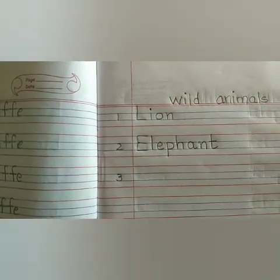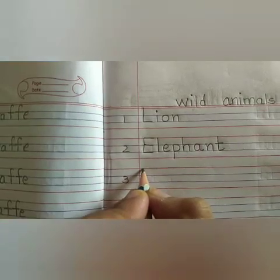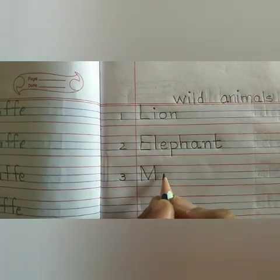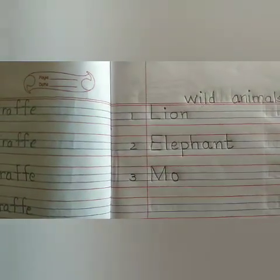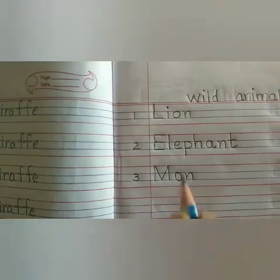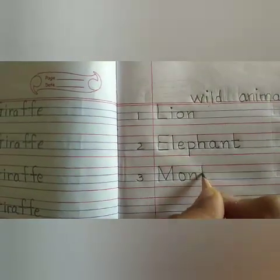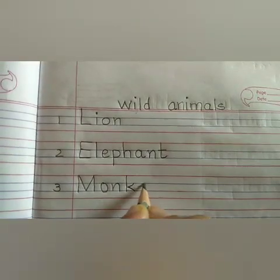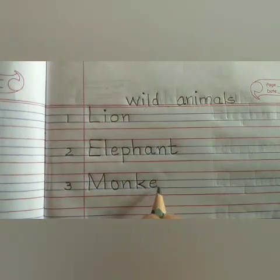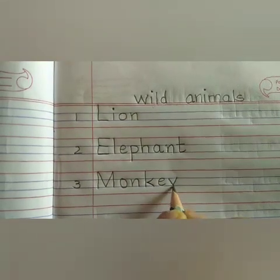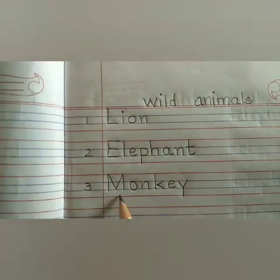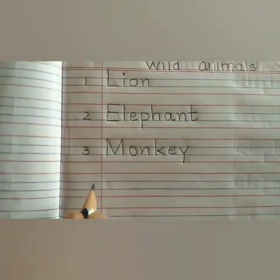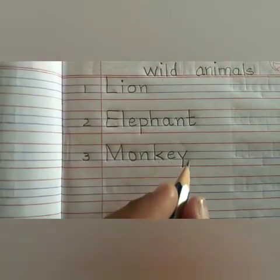Now we will write number 3 in the next line. We will write the spelling of monkey. We will write capital M, then small o between 2 blue lines, small n between 2 blue lines, small k, small e between 2 blue lines, small y. The spelling is M-O-N-K-E-Y. Monkey.